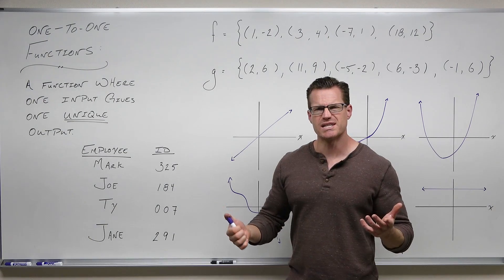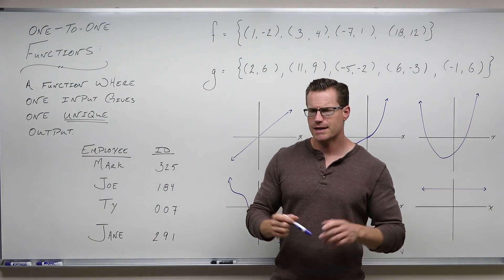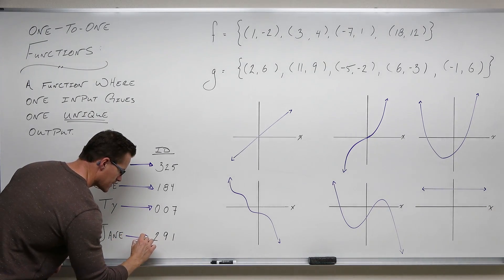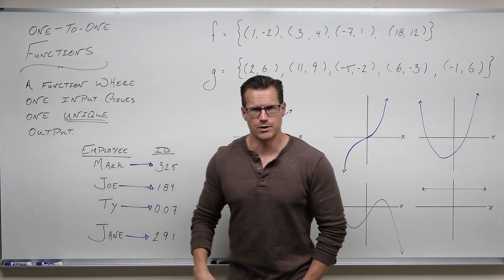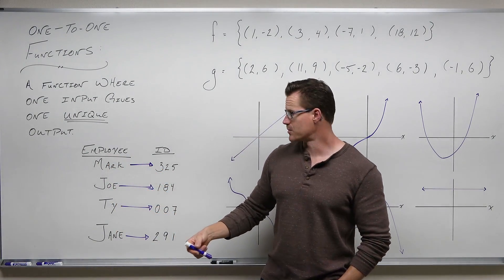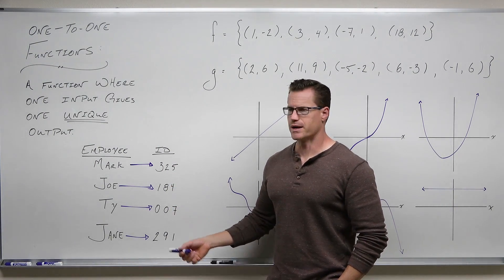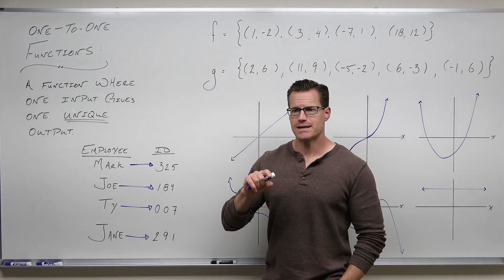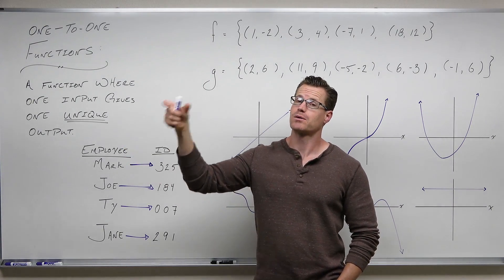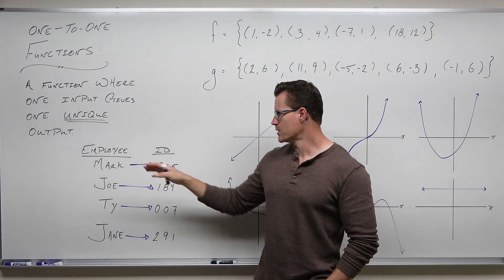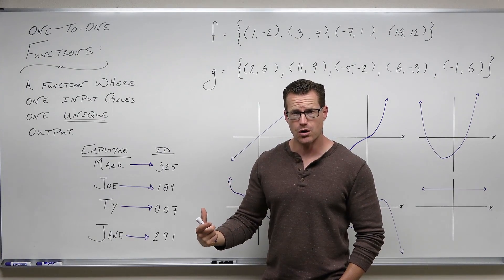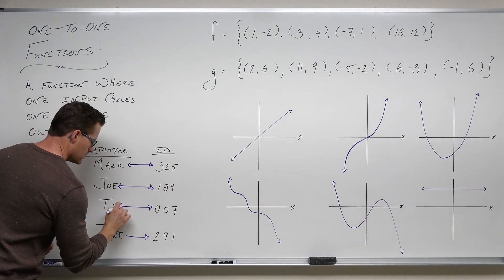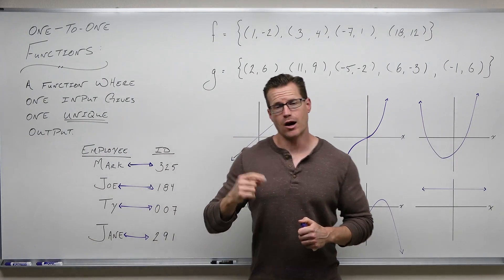Let's imagine this scenario. We have some employees and they have ID numbers. There's Mark, Joe, Ty, and Jane. Mark has an ID number of 325, Joe has 184, Ty has 007, and Jane has 291. Our inputs are the names — Mark, Joe, Ty, and Jane — and their ID numbers are our outputs: 325, 184, 007, 291. One idea I like to say is that one-to-one functions have to maintain this idea of mapping forward and backward. If a name goes to an ID number, the ID number has to be mapped backward to that same name. If I say Mark, you know the ID is 325. If I say ID 184, you know that's Joe. They're mappable both ways — inputs determine one output, and outputs determine one input.